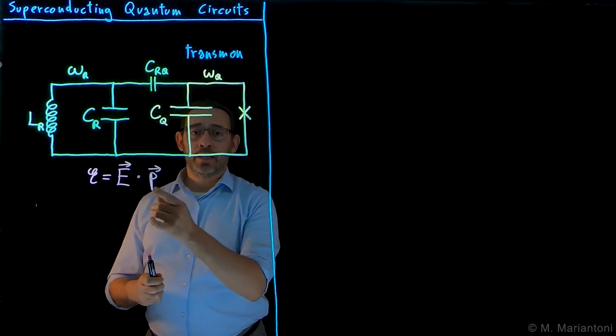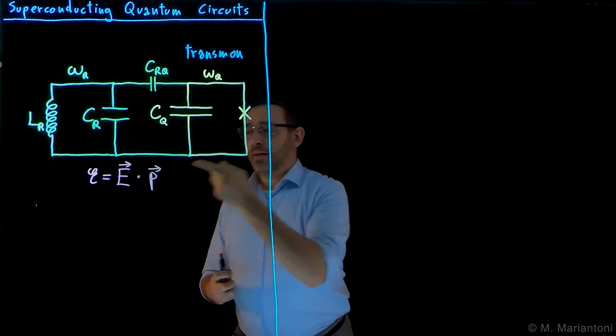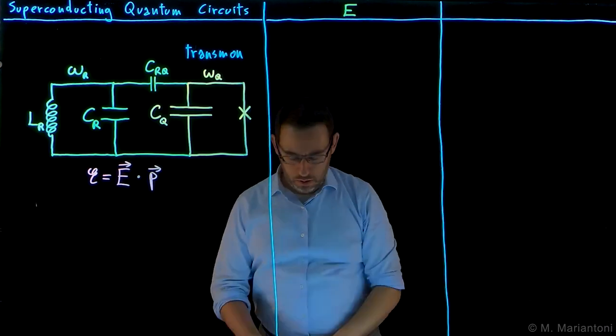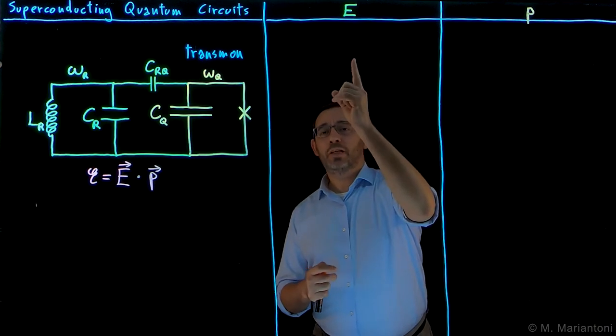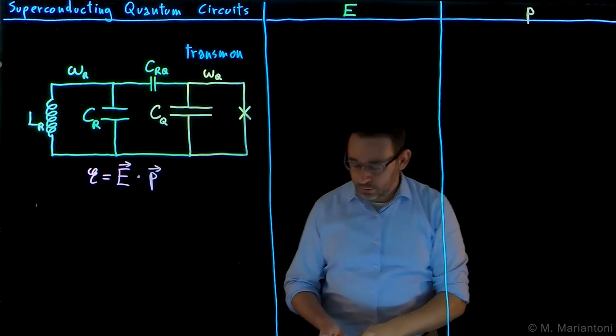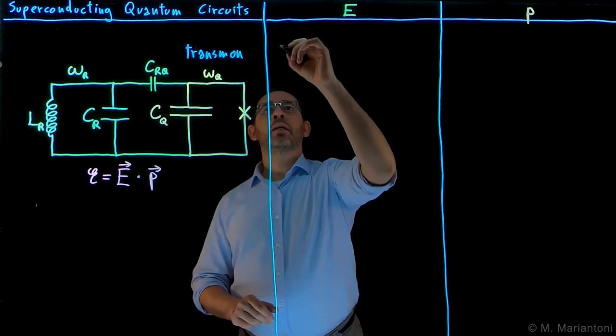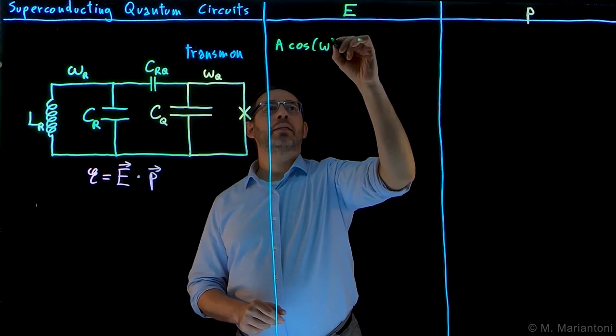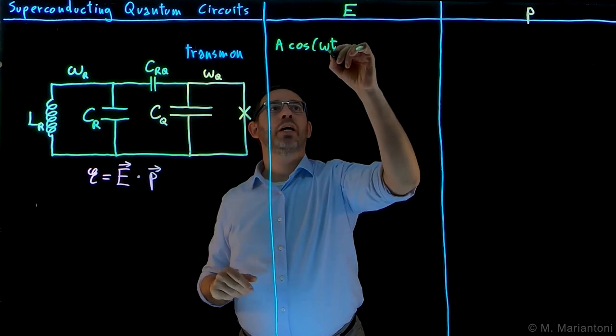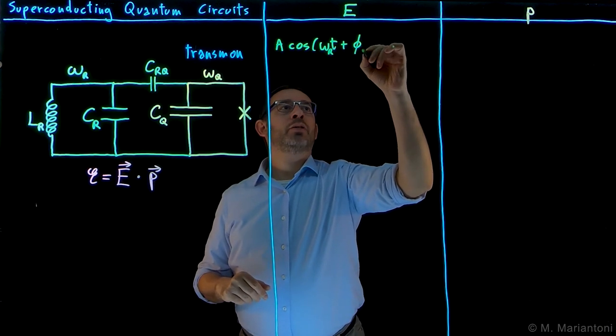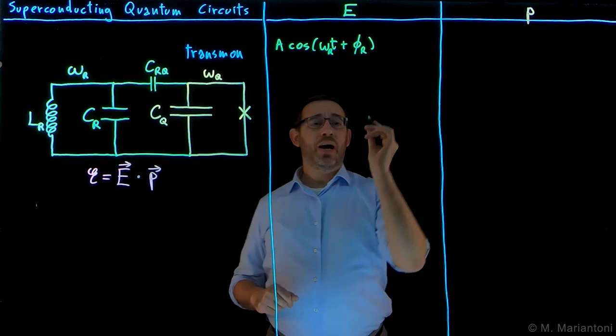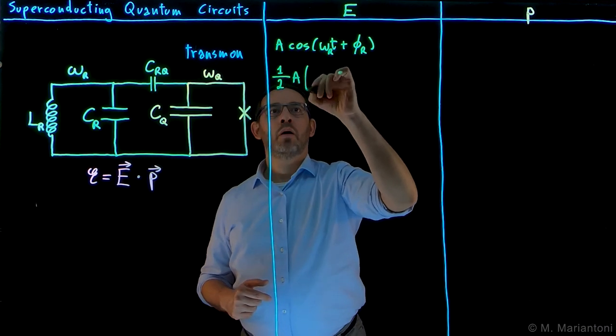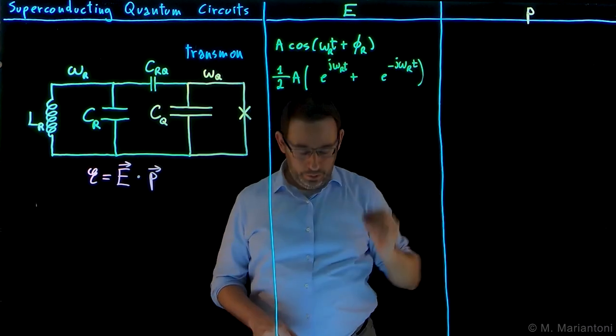So it's nothing but P dot E, the energy of a dipole in an external field. Here we're going to study the electric field on the left and the dipole moment on the right, first classically, then quantum mechanically. So let us begin with E. Classically, E is given by some amplitude A times the cosine of omega t, and it could be omega r, which is the resonance frequency of the resonator, plus a phase phi on the resonator. By means of Euler relation, we can rewrite this quantity in this fashion.